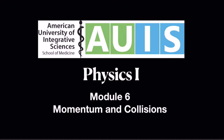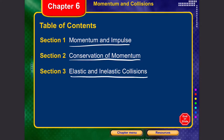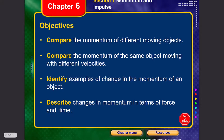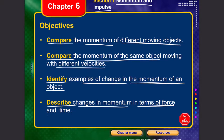Hello everyone, welcome to Module 6. In this module we're going to talk about momentum and collisions. We'll cover momentum and impulse, conservation of momentum, and elastic and inelastic collisions. In the momentum and impulse section, we'll compare the momentum of different moving objects, compare the momentum of the same object moving with different velocities, and identify examples of change in momentum.